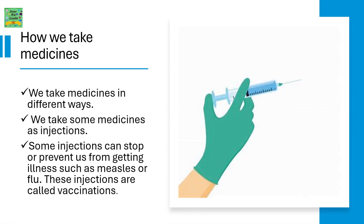How we take medicines: We take medicines in different ways. We take some medicines as injections. Some injections can stop or prevent us from getting illnesses such as measles or flu. These injections are called vaccinations.